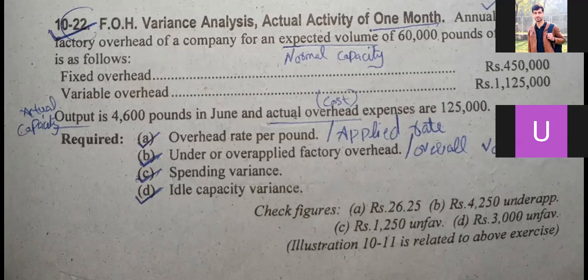You have to find: the overhead rate per pound, the under or over applied factory overhead, the overall variance, the spending variance, and the ideal capacity variance.